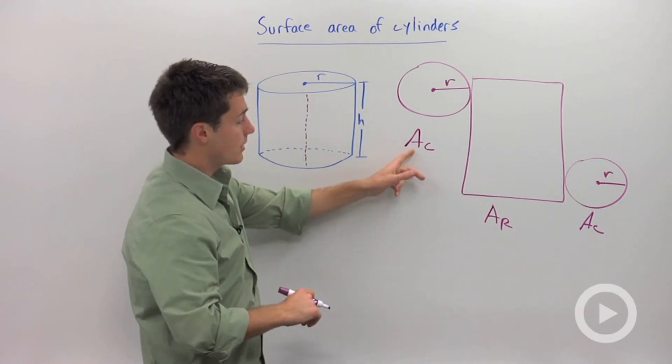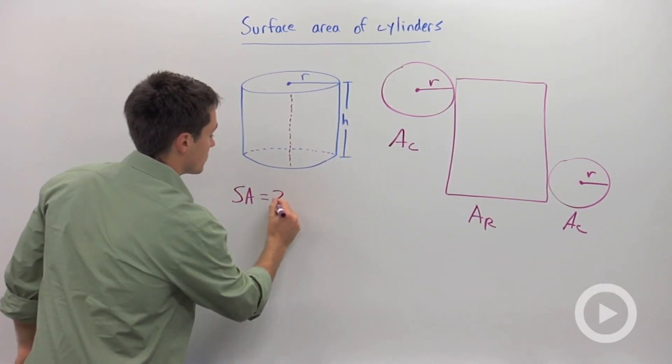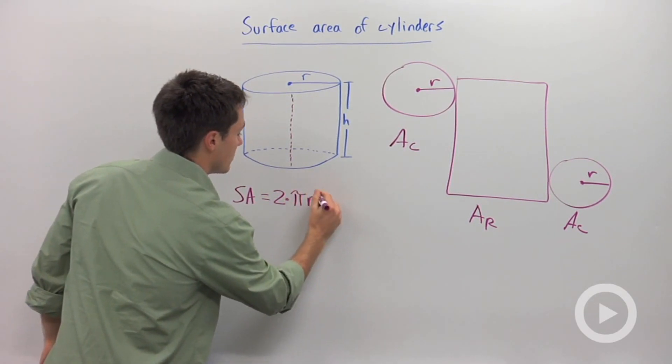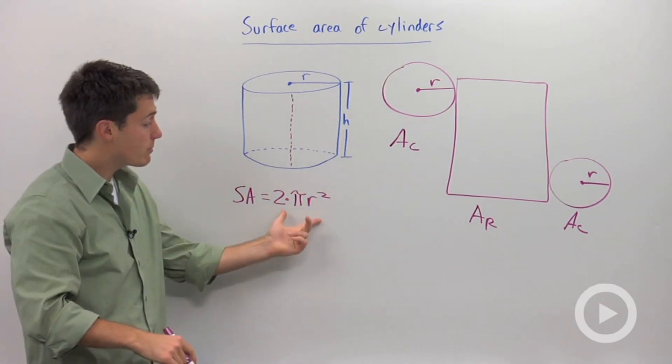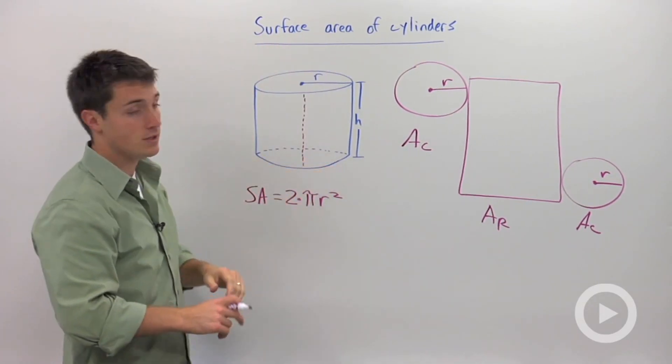Well let's start with the easy part, the area of the two circles. So I'm going to say the surface area is equal to 2 times π r squared. So that piece right there will calculate the surface area of the top circle and the surface area of the bottom circle.